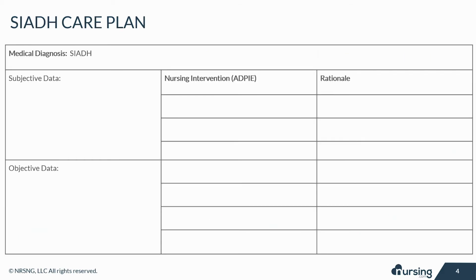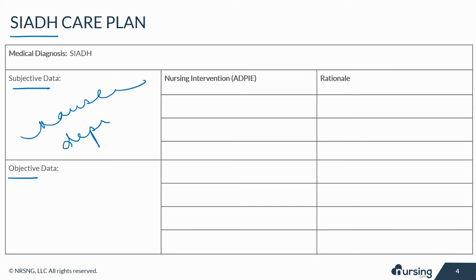Let's take a look at some of the subjective and objective data that your patient with SIADH may present with. Subjective data are things based on your patient's opinions or feelings, like nausea, muscle cramps, depression or irritability, and fatigue.